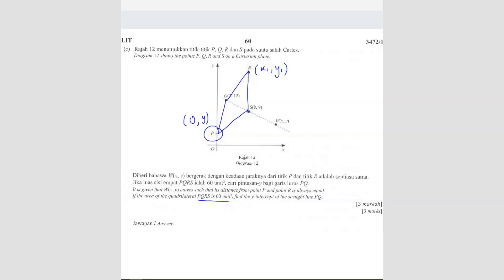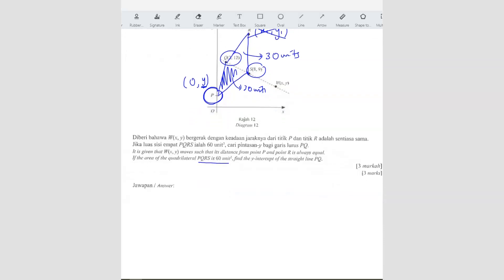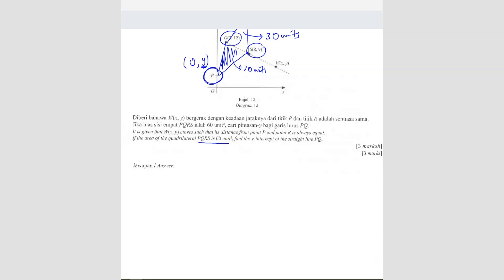If I use this PQRS and form our quadrilateral using the formula to solve, we will have too many unknowns. Because here you have 0, Y. Then here the R value, you have X1, Y1. So you got too many unknowns to solve for just one equation. So what we're going to do is, since they are both equal triangles, we can divide by 2. So we have 30 units here and 30 units here. We don't need both, we only need one of these. Because we know this value, we know this value, and we just have to find the Y-intercept.